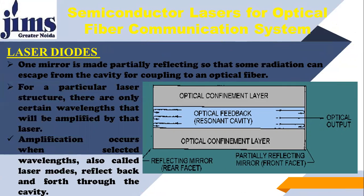One mirror is made partially reflecting so that some radiation can escape from the cavity for coupling to an optical fiber. For a particular laser structure, there are only certain wavelengths that will be amplified by that laser — lasers have a certain window of wavelengths amplified by the lasing action. Amplification occurs when selected wavelengths, also called laser modes, reflect back and forth through the cavity. For lasing to occur, the optical gain of the selected modes must exceed the optical loss during one round trip through the cavity, a process referred to as optical feedback.